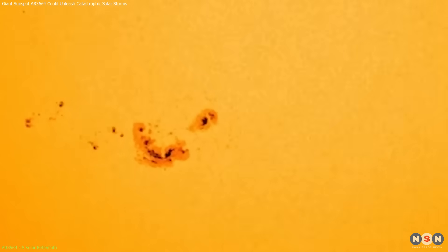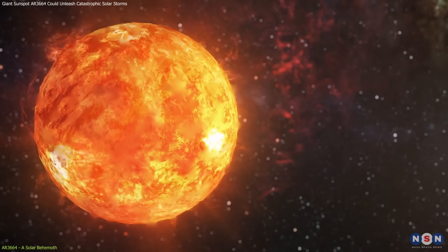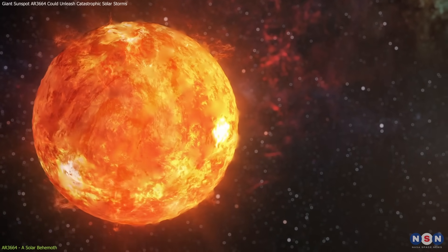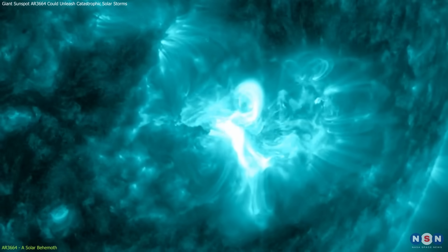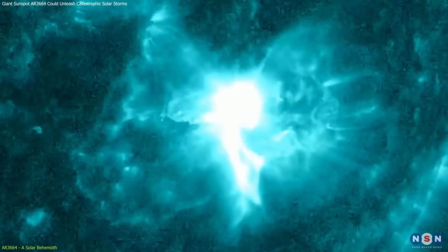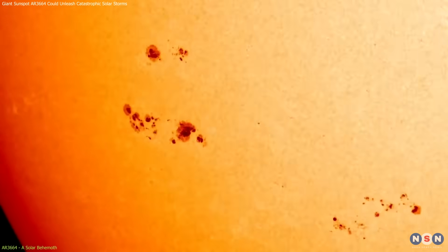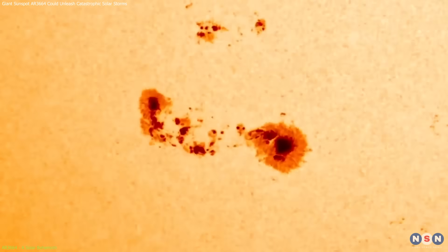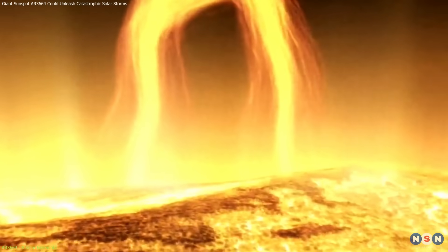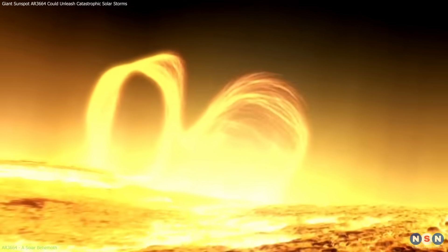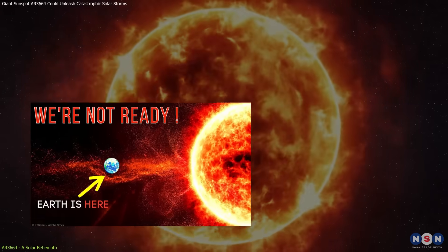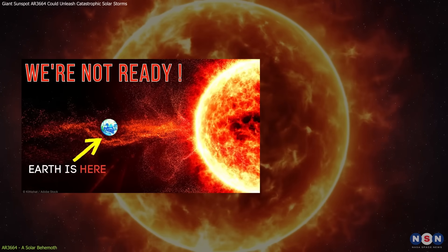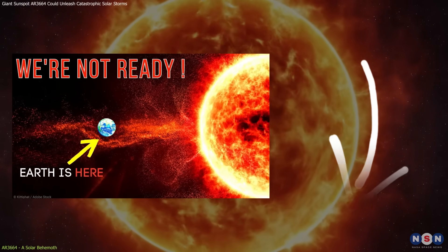Its sheer size makes it visible with basic eclipse glasses, which makes it a popular subject for educational and outreach programs aimed at sparking interest in solar physics and space weather. This sunspot activity is a textbook example of how sunspots influence solar phenomena. Sunspots are cooler areas on the sun's surface, formed by intense magnetic activity that inhibits convection. You can check our YouTube video where we deep dive into solar flares and solar cycle 25, link in the description.